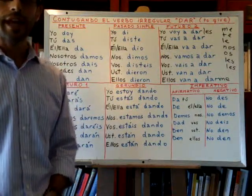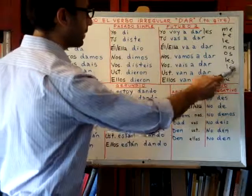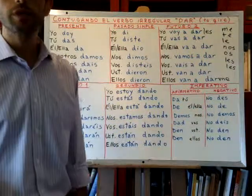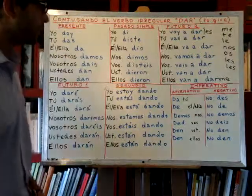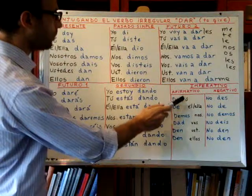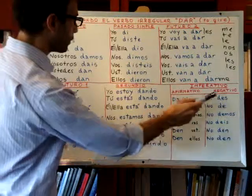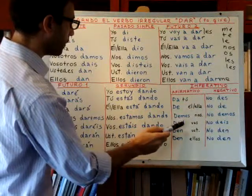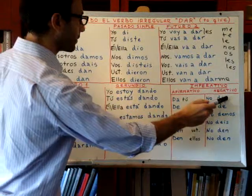In the negative it would be no les des — for 'don't give them.' No les des. You can see how the tú singular and vosotros plural is different in the affirmative and in the negative: da and des.